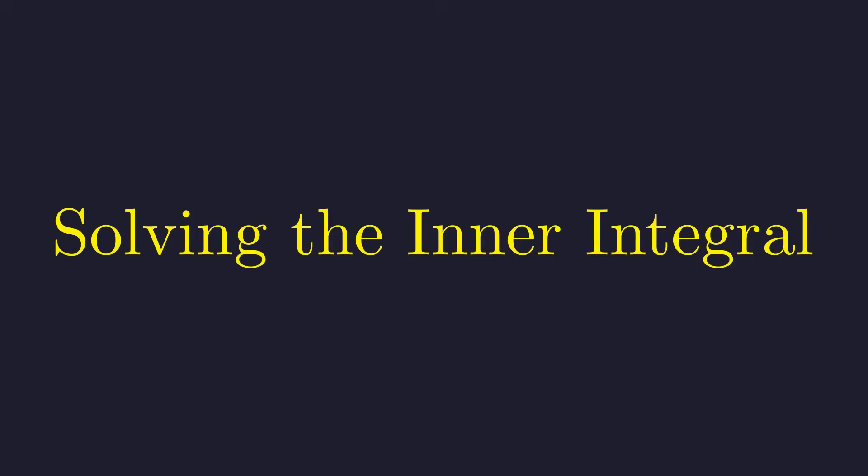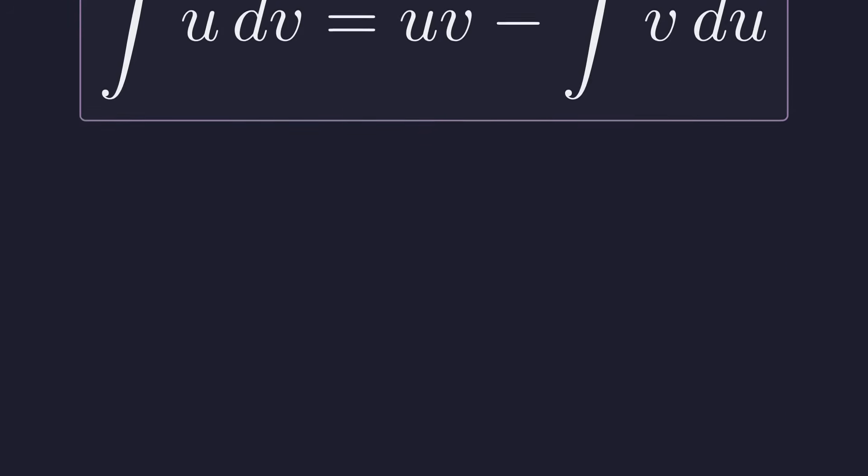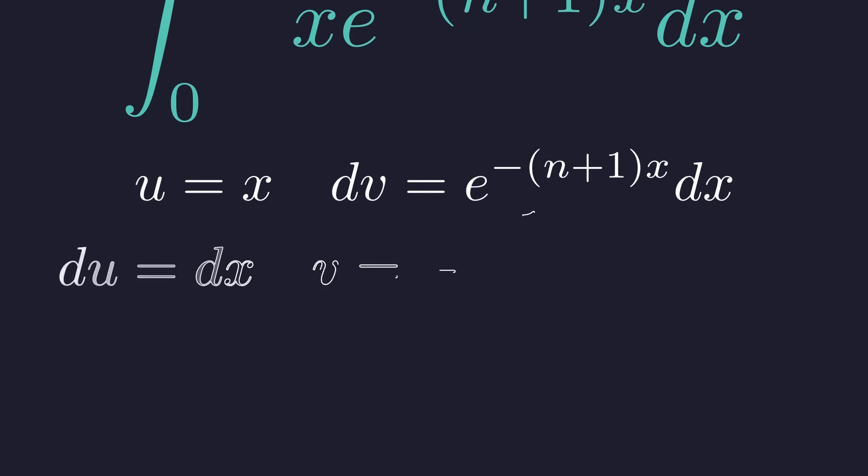We can handle this integral using integration by parts. Integration by parts is the technique where you break an integral of a product into simpler pieces using this formula. Let's set u equal to x and dv equal to e to the negative n plus 1 times x dx. Taking the derivative of u gives du and integrating dv gives v.